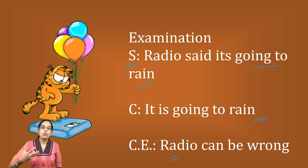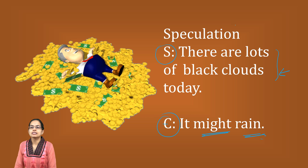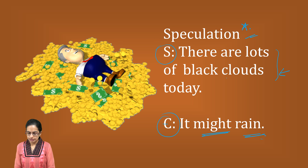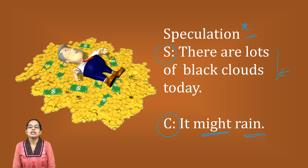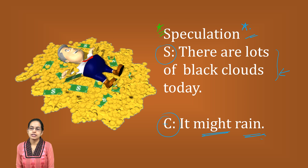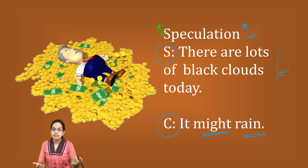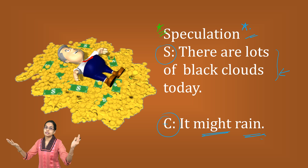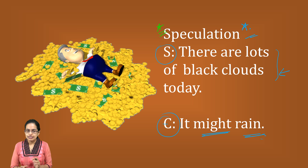There is another question which talks about speculation. There are lots of black clouds today, so when there are black clouds it might rain — this is a kind of statement conclusion problem where you are not deducing from given facts but making a speculation. Sometimes in your statement conclusion problems you also have the element of speculation, where you try to understand that if this is the phenomenon, this is going to happen.